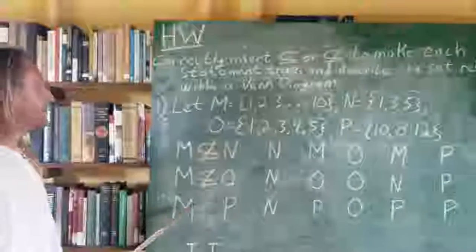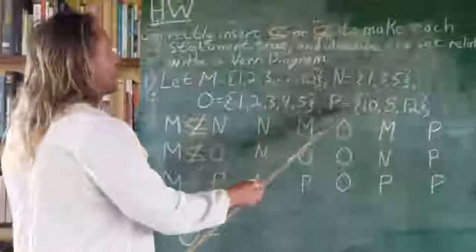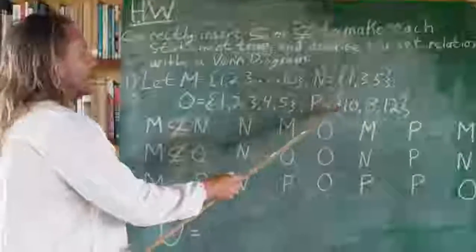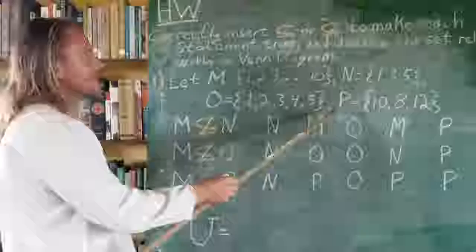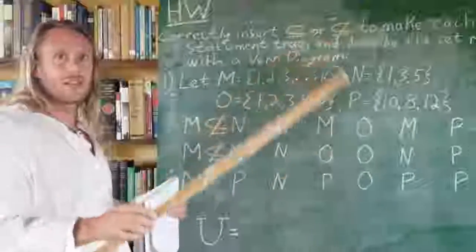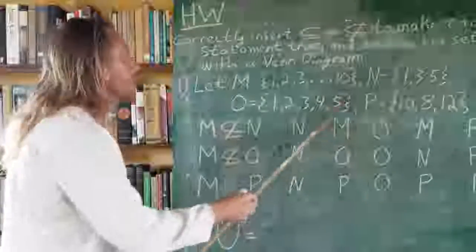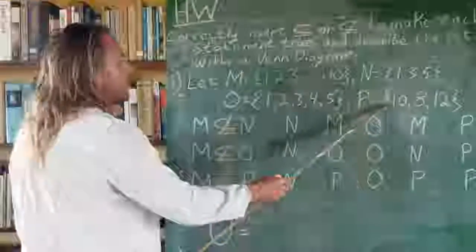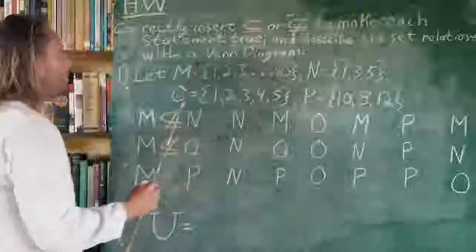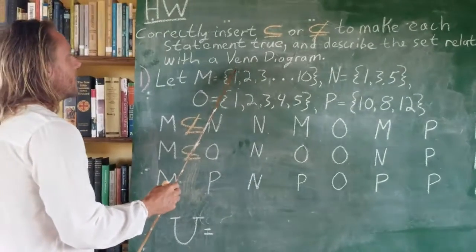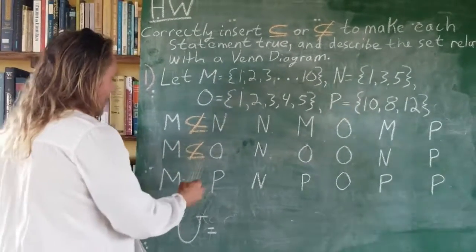How about M and P? If a set has fewer elements than the other set, the longer set cannot be a subset of the other. So we can see right off the bat that M is not going to be a subset of P. Just to walk through it: do we have a 1 in P? No. So M is not a subset of P.